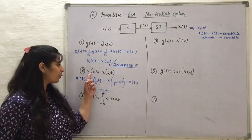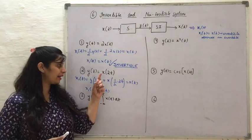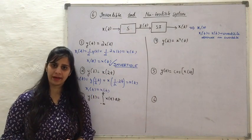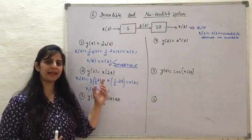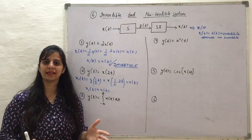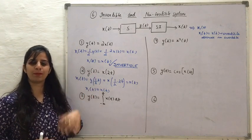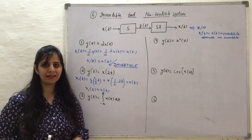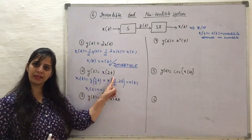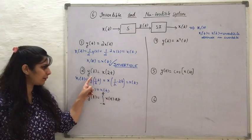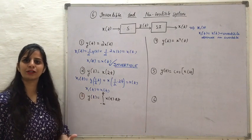In the second example, Yt = X(2t). The system is applying a time scaling operation on the input signal with a scaling factor greater than 1, which gives a signal compressed in the time domain. To get Xt back, we expand the signal in the time domain. I apply another time scaling operation on Yt with a scaling factor less than 1 — specifically 1/2, which is the inverse of the factor used to compress the signal. Applying this transformation, we are able to get Xt back. Therefore, this system is also an invertible system.